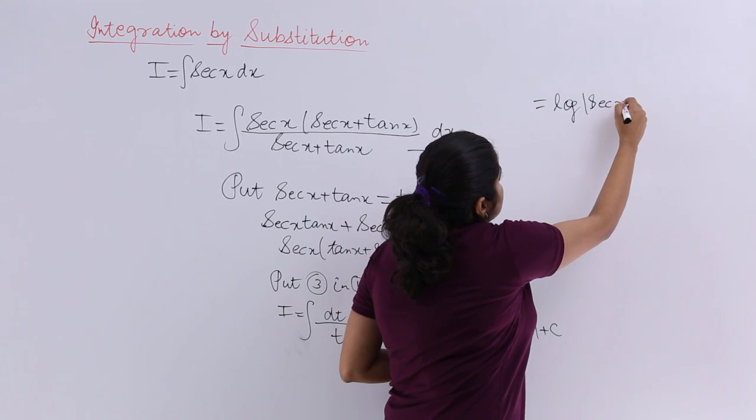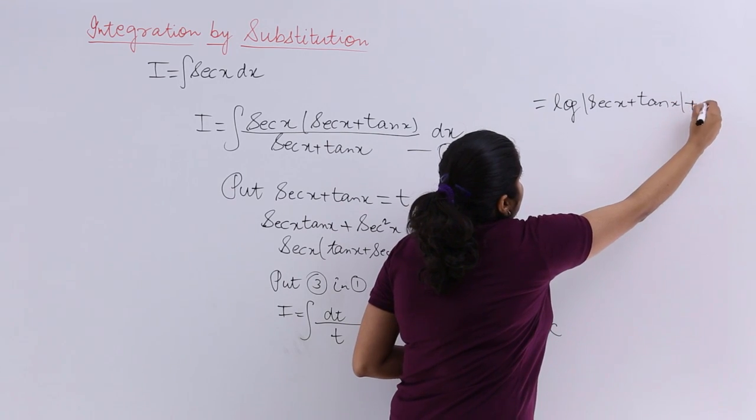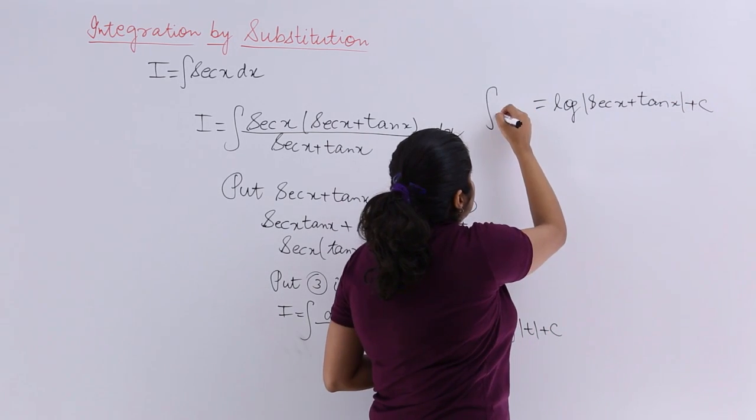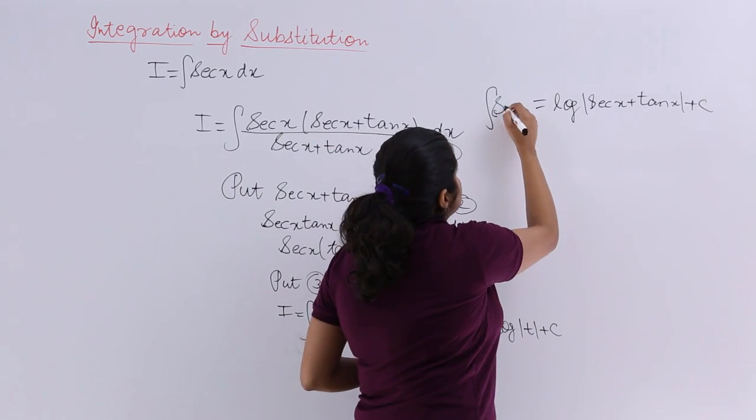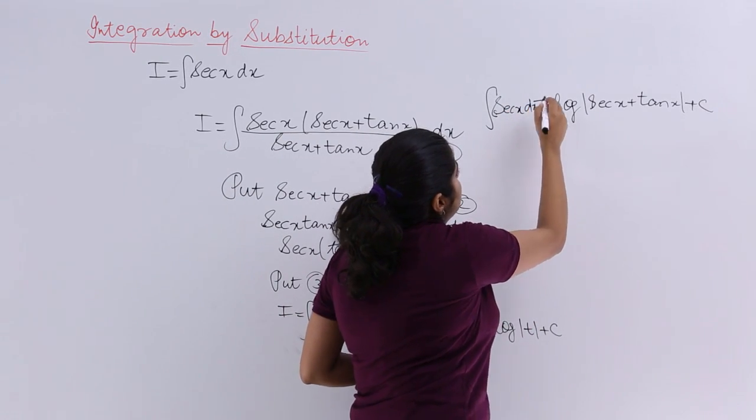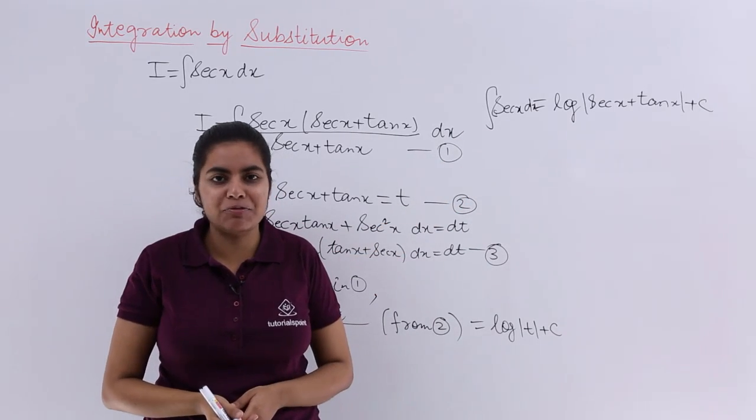So log of sec(x) plus tan(x) plus c is the integral of the given thing, that is integral of sec(x) dx. That is how you do it, and this is the formula that you have to memorize.